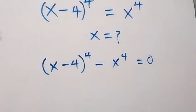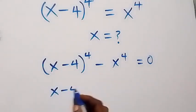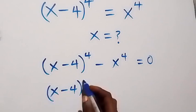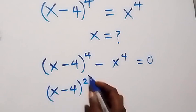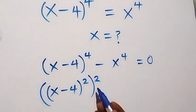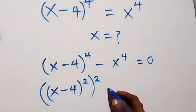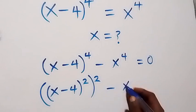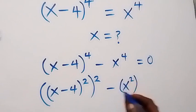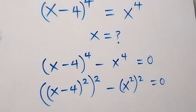Then from what we have here, we can write this as x minus 4 raised to the power 2, then also raised to the power 2. From the law of indices, this power multiplied gives us x minus 4 squared, then also here minus x squared, then all squared, equals to 0.